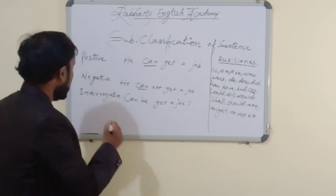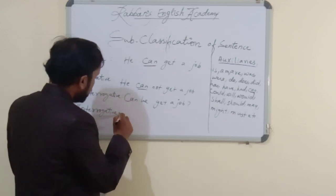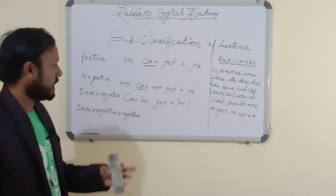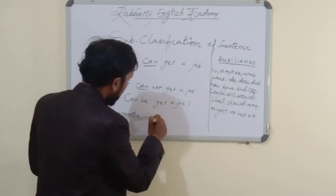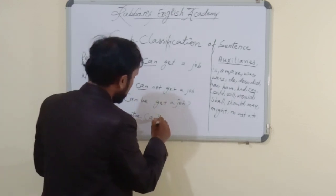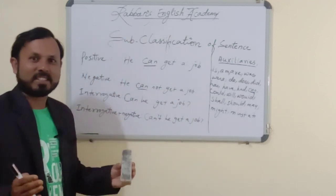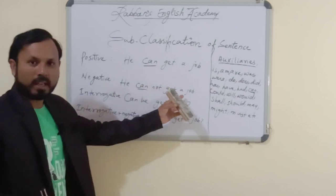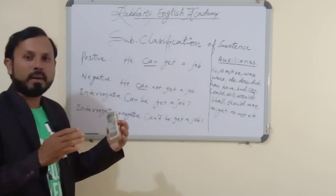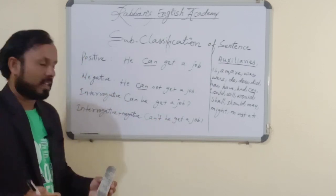'Can he get a job?' — 'Kya woh job paa sakta hai?' Next, interrogative plus negative. How to make interrogative plus negative? Auxiliary will come first — auxiliary is 'can' — and: 'Can he not get a job?' Or in abbreviation: 'Can't he get a job?' Let me translate into Hindi: 'He can get a job' — 'Woh job paa sakta hai.' 'He cannot get a job' — 'Woh job nahi paa sakta hai.' 'Can he get a job?' — 'Kya woh job paa sakta hai?' 'Can't he get a job?' — 'Kya woh job nahi paa sakta hai?'